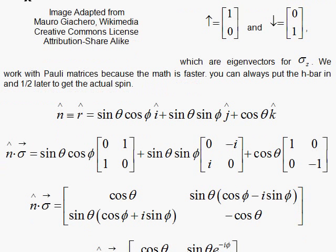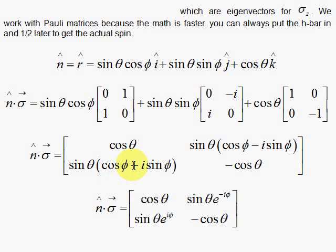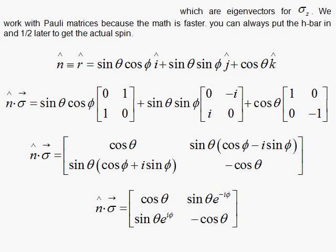Using the Euler formula, you can replace cosine phi plus i sine phi with e to the i phi. And if you flip the sign on that phi, cosine of negative phi will simply be cosine phi — that won't change. But since sine is an odd function, you get the minus sine out in front. So that's a nice result.